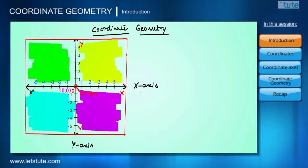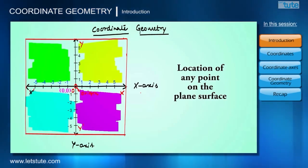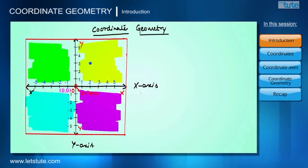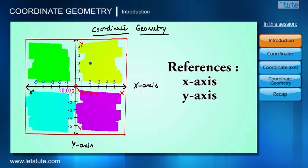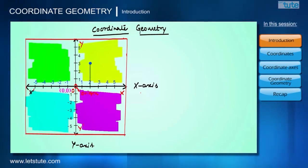These values of X and Y axis help us to find the location of any point on the plane. For example, here is a point and I want the location of this point. For finding the location we require reference, so we will take reference of X axis and Y axis. We can see that this point is covering two units on positive X axis and three units on positive Y axis.